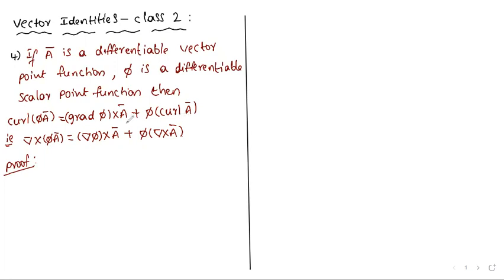This can also be written as: del cross (πĀ) equals del(π) cross Ā plus π into del cross Ā. So first, write the given statements.